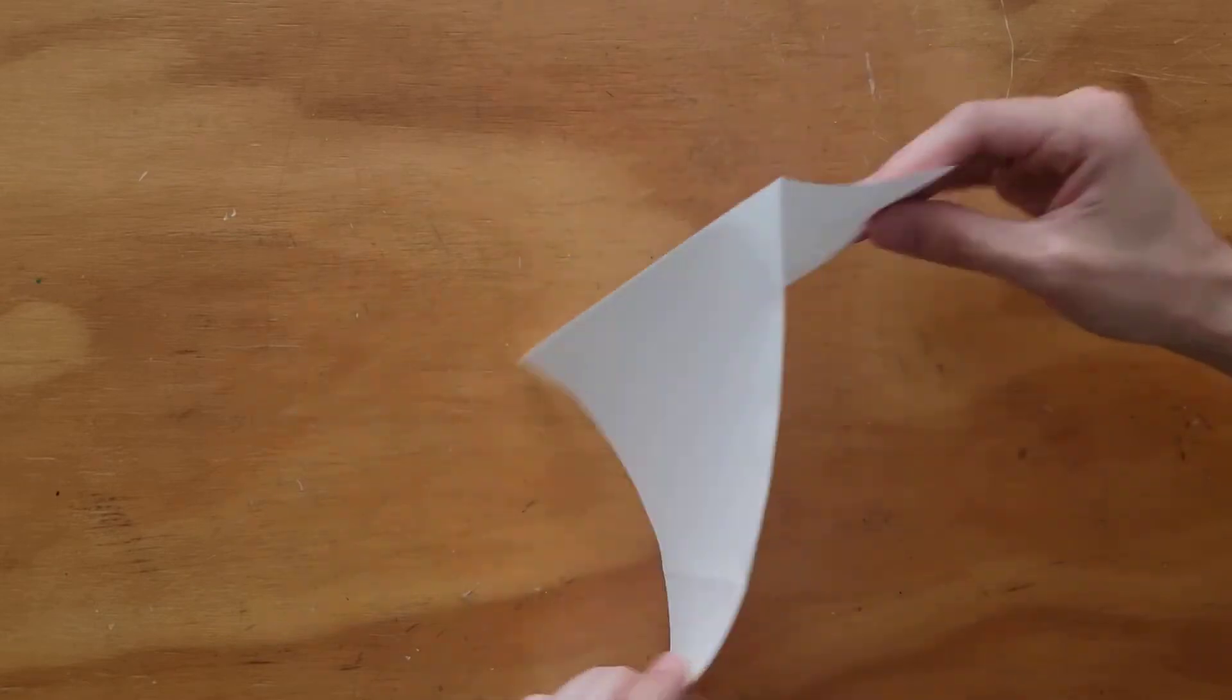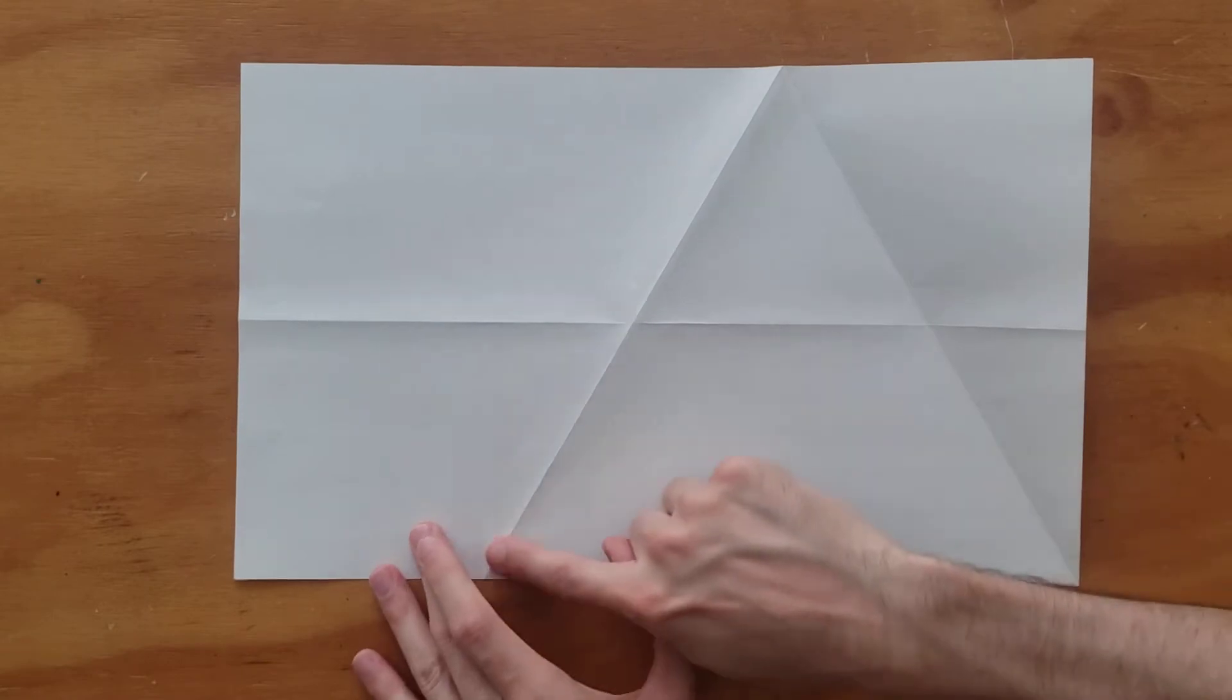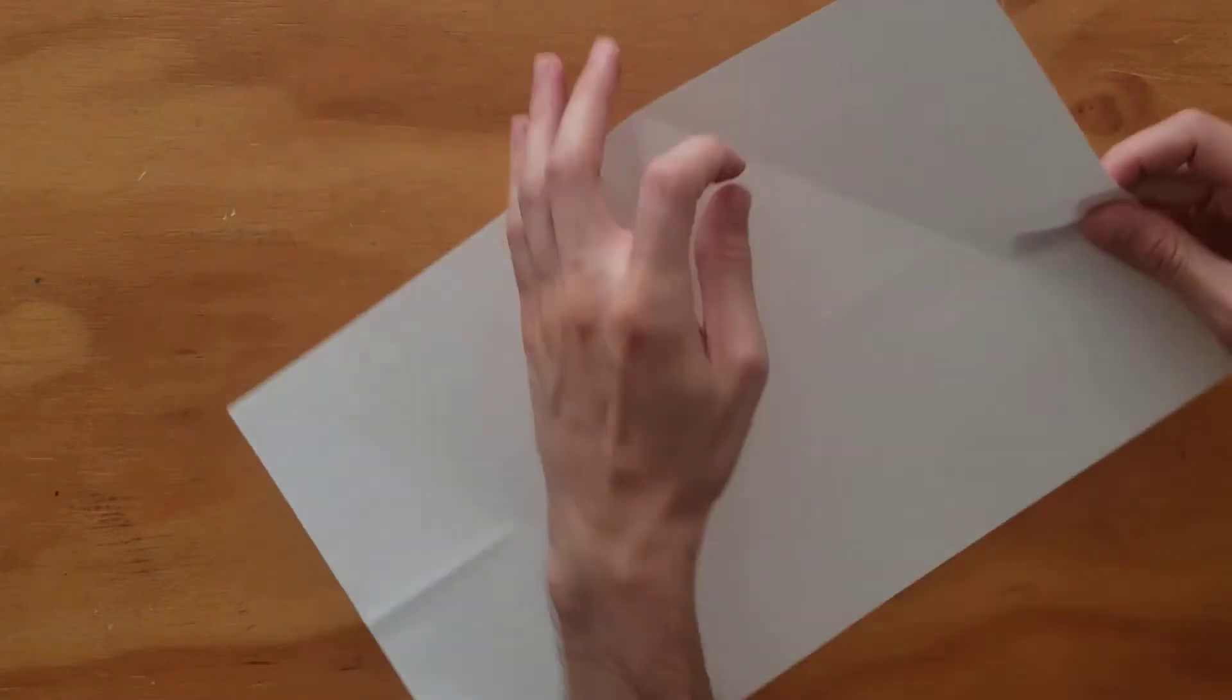And so, this is the construction of an equilateral triangle. As you can see there, this is the equilateral triangle. We're going to cut this out.